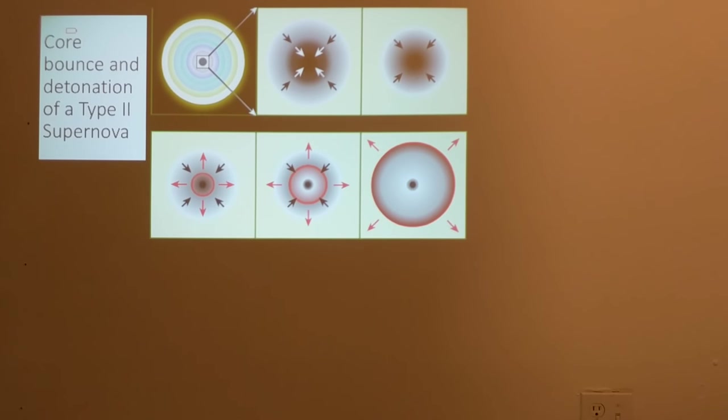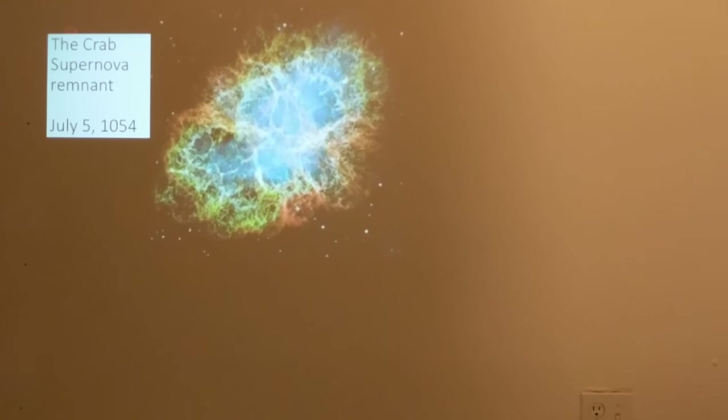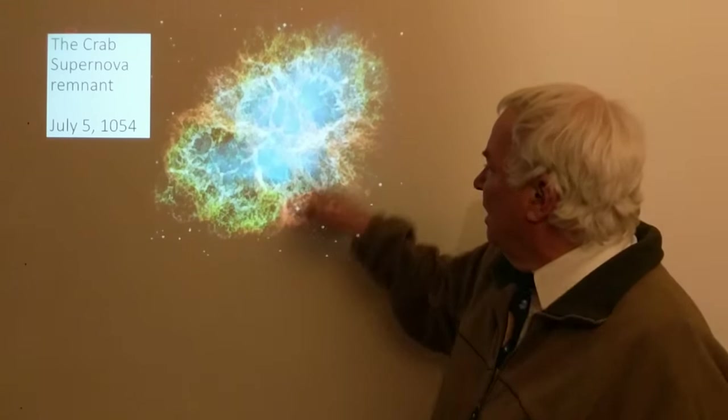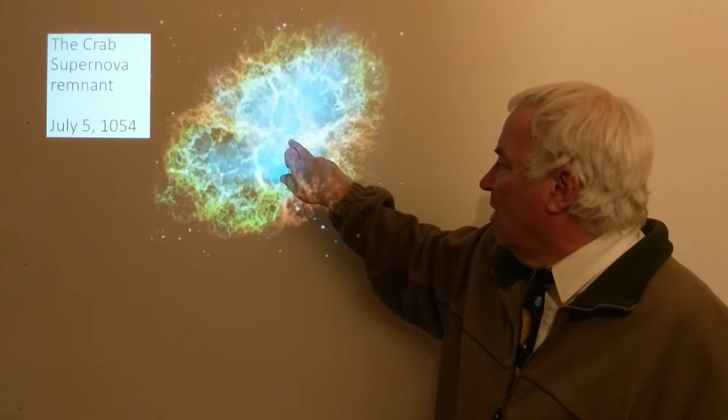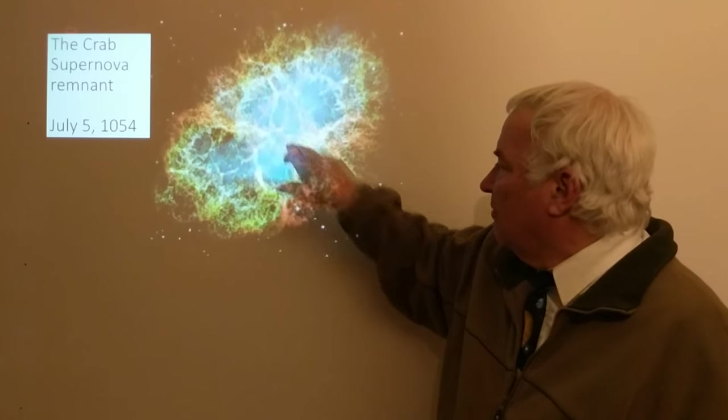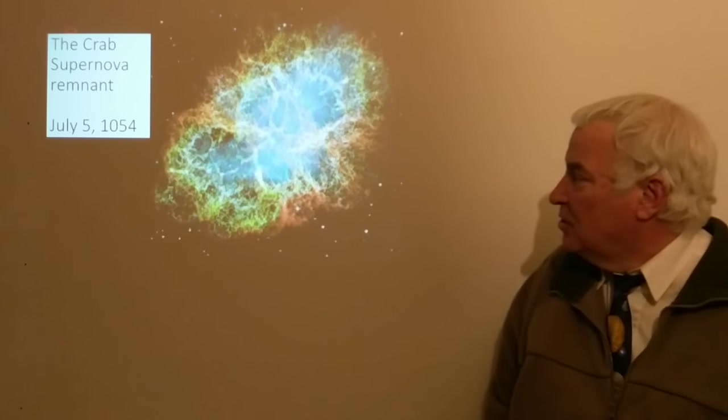In the year 1054, July 5th, for 23 days a bright object was seen during the day. For more than a year it was seen at night. It was later discovered and called the Crab Nebula, and we now know it's a supernova remnant. We can see all of the structure. Down here in the center is a neutron star, the object that is the leftover remnant of the supernova explosion.